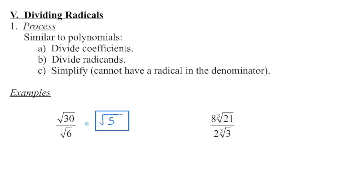In the second example, we're now dealing with a cube root, but the same process applies. We begin by dividing the coefficients: 8 divided by 2 is 4. We divide the radicands: 21 divided by 3 is 7. Don't forget the index — this is a cubed root. The denominator would be over 1, and there is no perfect cube in the radicand that we can remove, just as in the first example there was no perfect square to remove.